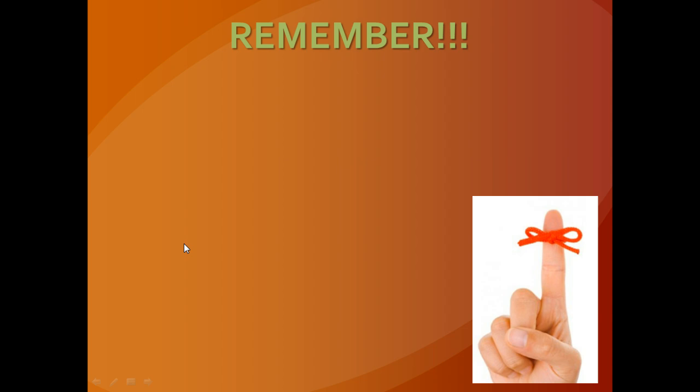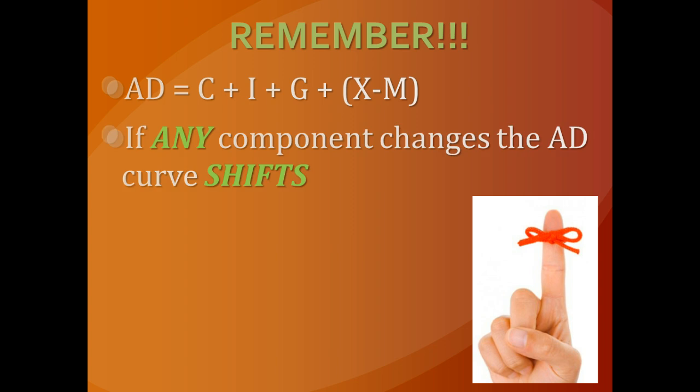When it comes to the difference between a shift and a movement in the aggregate demand curve, it's important to remember that the aggregate demand curve is essentially the GDP formula: C plus I plus G plus X minus M. If any one of those components changes — if C, I, G, or net exports increases — that's a shift in the aggregate demand curve, creating a brand new set of coordinates between price level and output, shifting the curve to the right. If they go down, aggregate demand shifts to the left. If C, I, G, and net exports don't change, then there has been a movement along the demand curve.